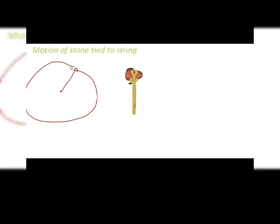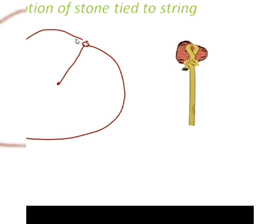If at this point you release it, the stone will be thrown outward in this direction. This means at every point in time, the stone by itself wants to move in a particular direction. The only reason it doesn't is because of the force exerted by the center.